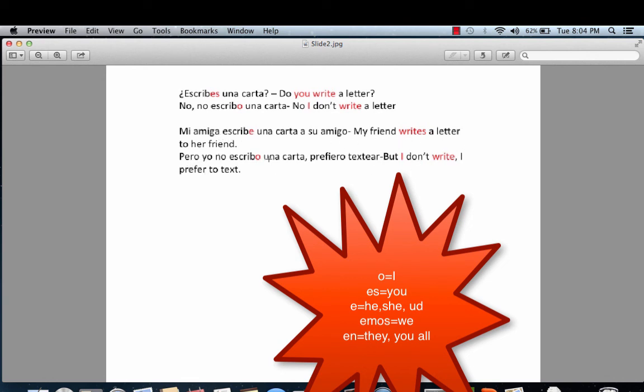Pero yo no escribo una carta. Prefiero textear. But I don't write, I prefer to text. In here, the letter O represents I. I write. In this case, it's negative, so I have the don't. In Spanish, it's not. And this concludes the lesson for ER and IR verbs.